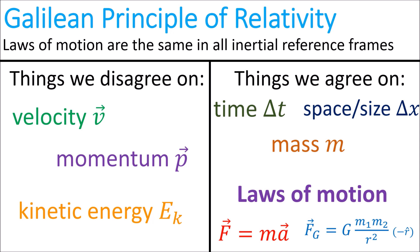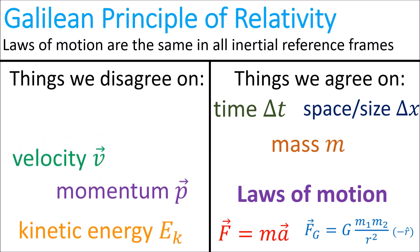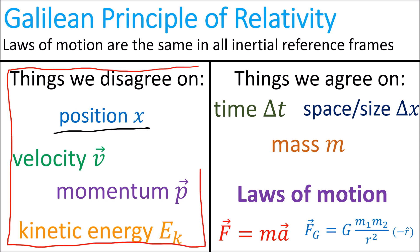Now, I should mention that even though different observers will agree on the size of objects and the space between objects — denoted delta x — different observers will disagree on the position of objects, denoted by x on its own. The main goal of Galilean relativity is to calculate the different quantities that people disagree on in different reference frames.